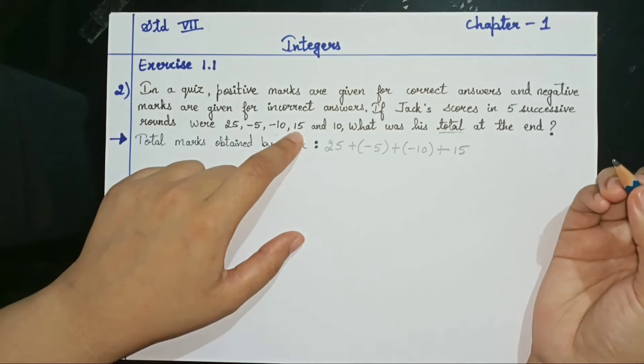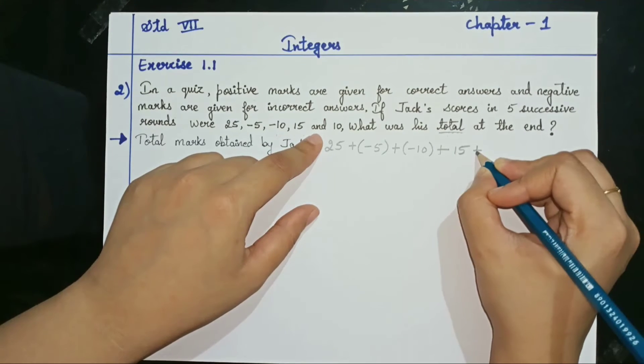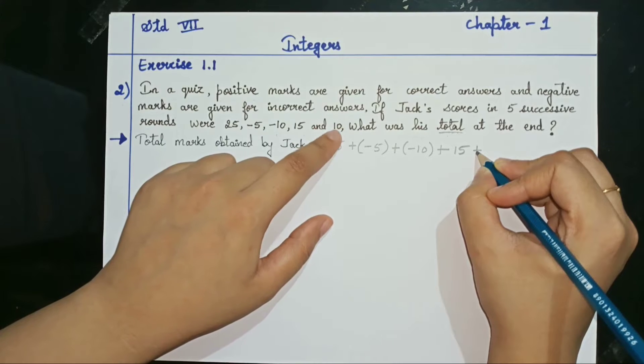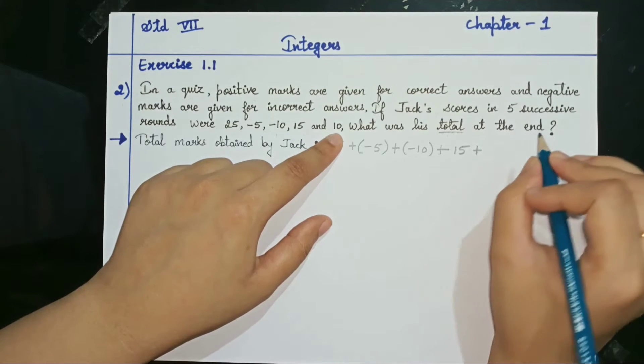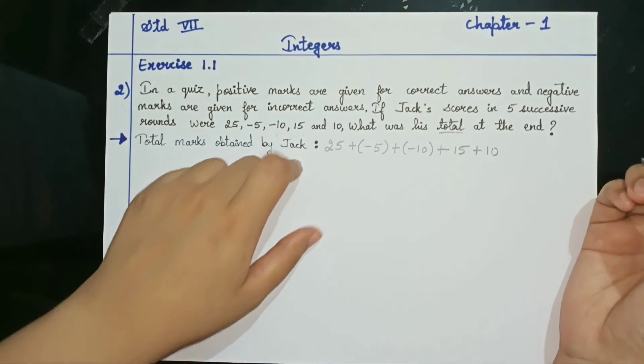Then lastly put the addition symbol because we are doing total. Next marks, last marks they have given 10. It's plus 10. So again no need to put it in the bracket. Directly you can write 10.